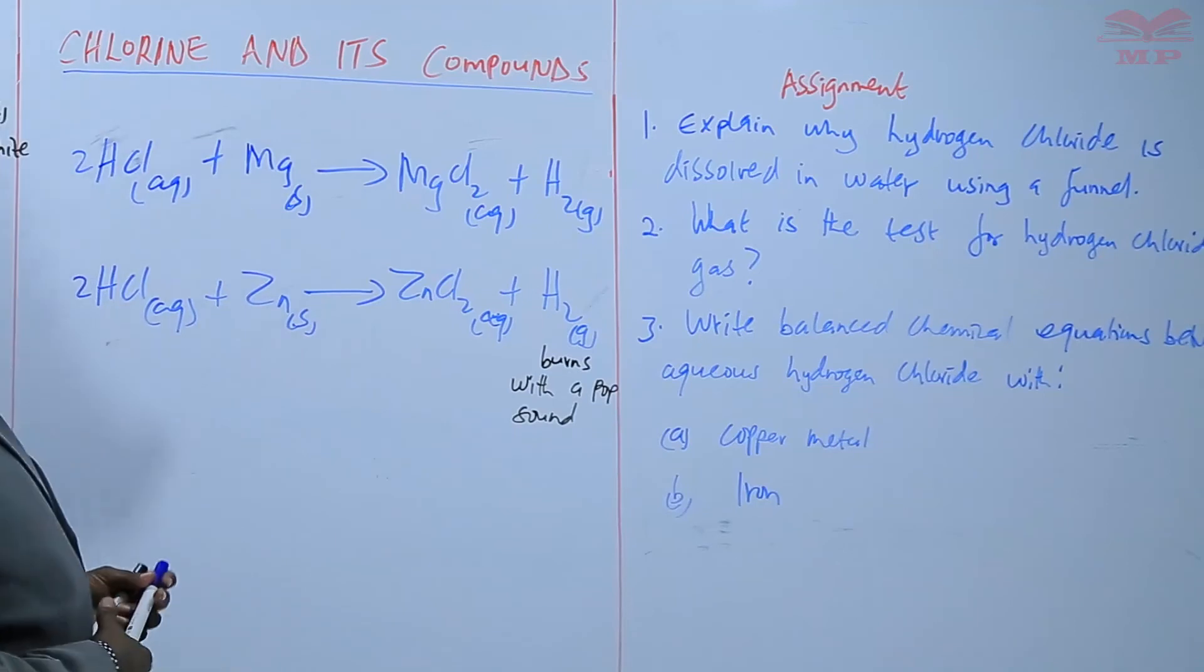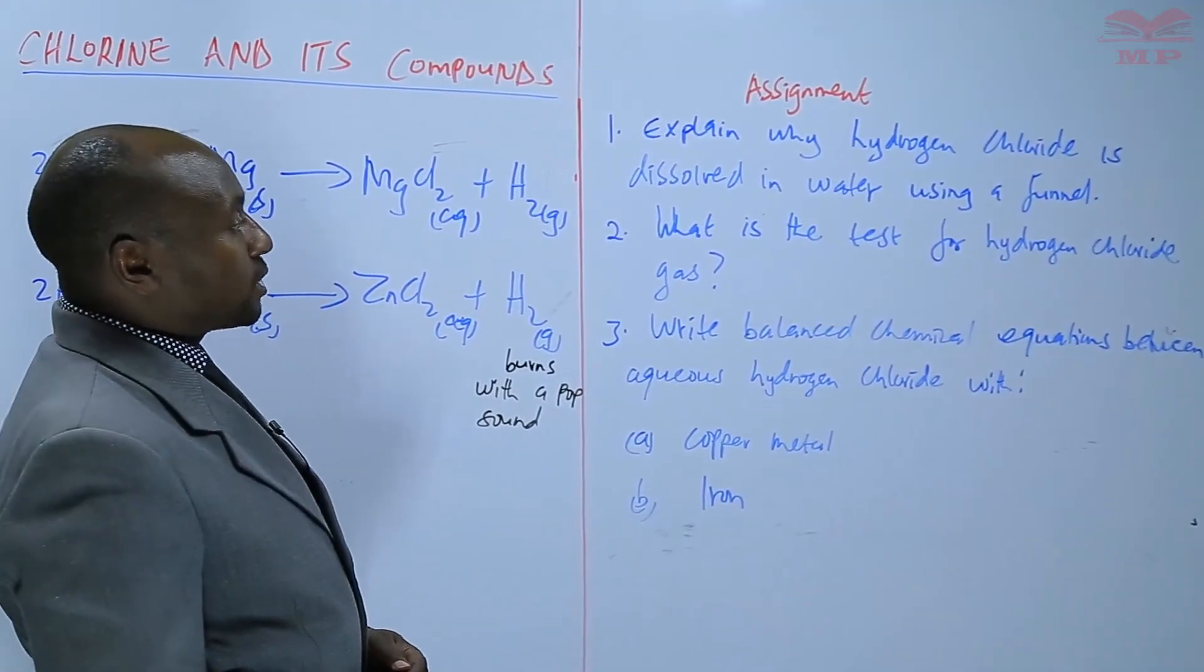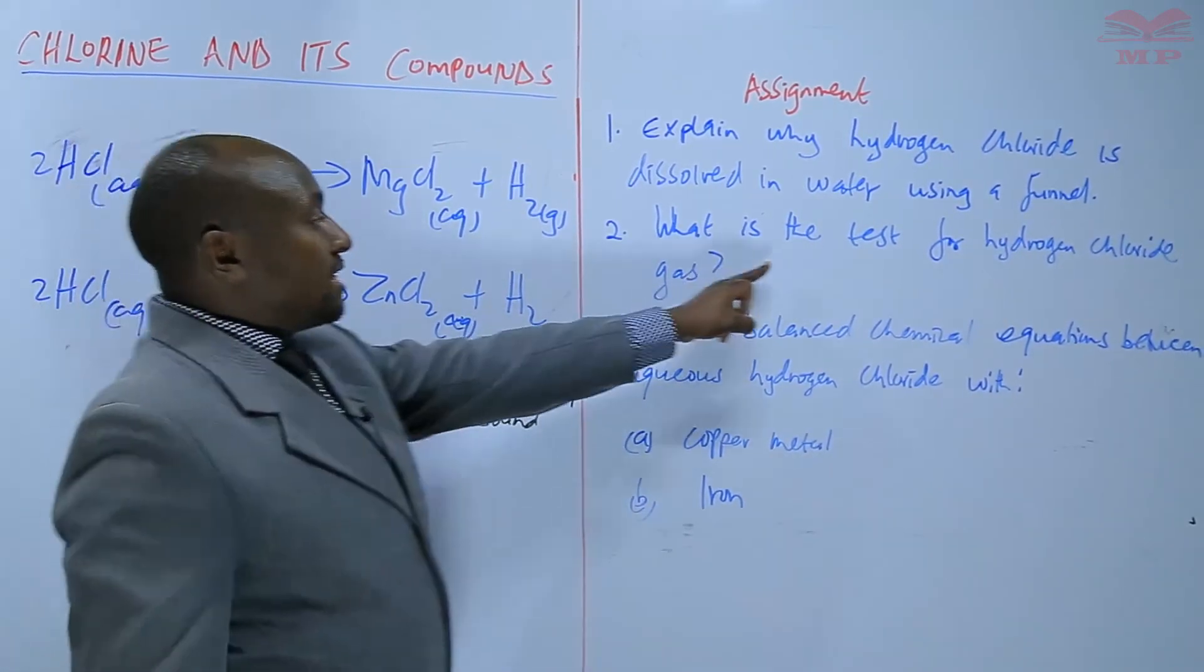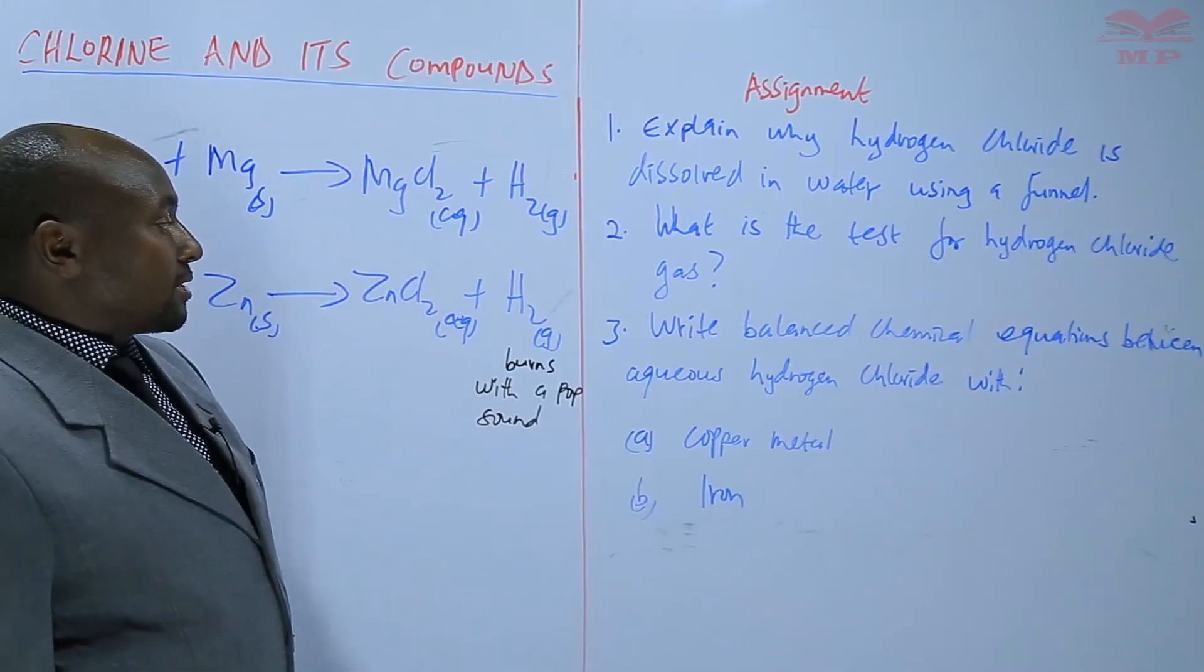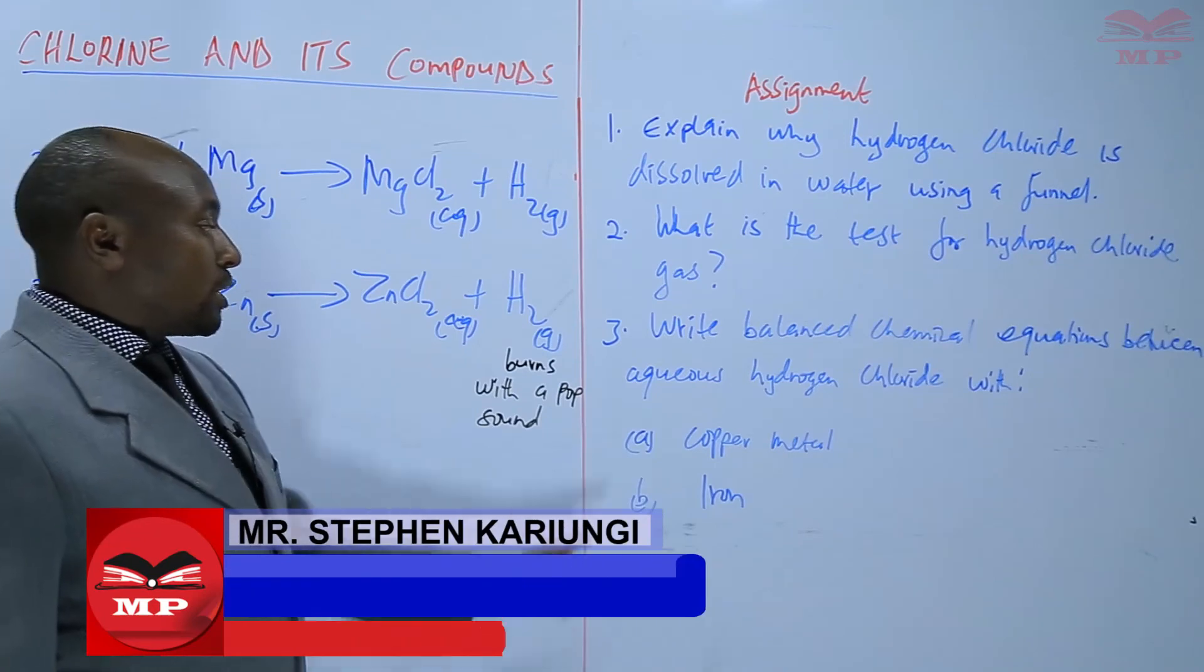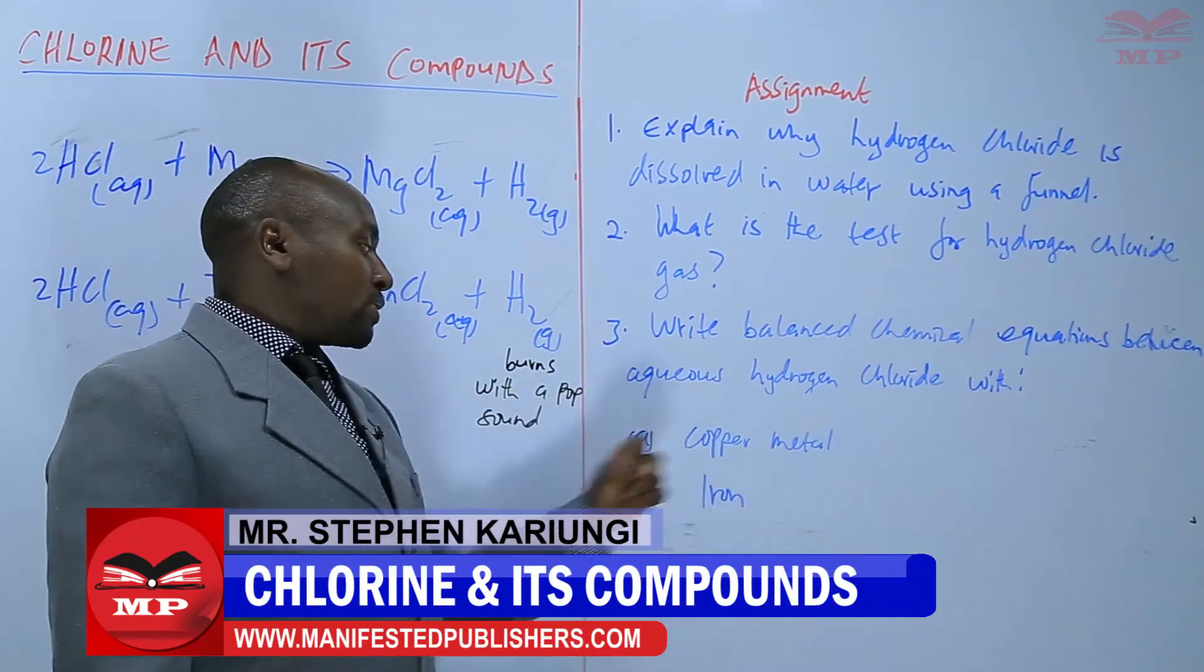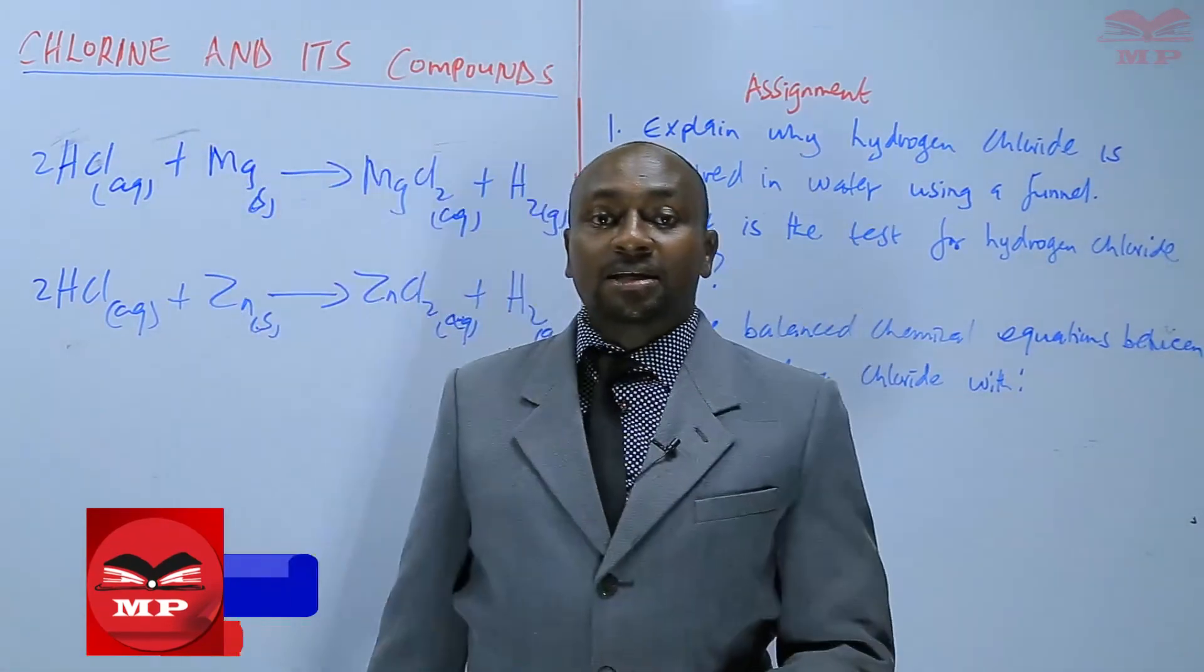So we'll have an assignment on this. The assignment, the first question: explain why hydrogen chloride is dissolved in water using a funnel. Two: what is the test for hydrogen chloride gas? Number three: write balanced chemical equations between aqueous hydrogen chloride with copper metal and with iron. So we'll stop there until next time, goodbye.